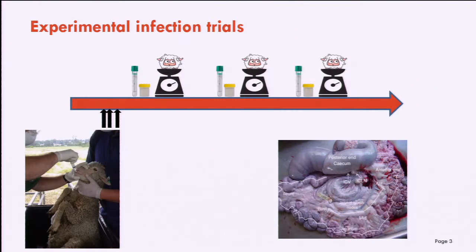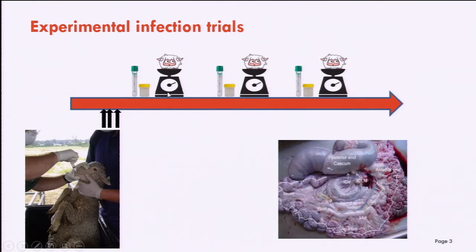I'm going to talk about two main experimental infection trials that we've carried out at the University of Sydney. We initially developed a model where the lambs are given three oral doses when they are about three to four months of age. We then take blood and fecal samples and weigh these animals at regular intervals until we see clinical disease or weight loss. At necropsy, we take a range of intestinal and extra-intestinal tissues to characterize the disease.